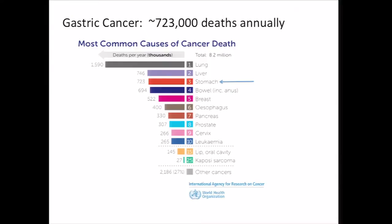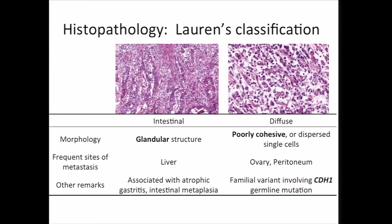Stomach cancer is a bad problem. Stomach cancer is one of the top three causes of cancer death across the world, killing over 700,000 people every year. From the eye of the pathologist, there are typically two main groups that gastric cancer is sorted into: the intestinal-type tumors and the diffuse-type tumors. The intestinal-type tumors are a more typical adenocarcinoma — they grow in glands and have more of the classic cancer-associated genome features.